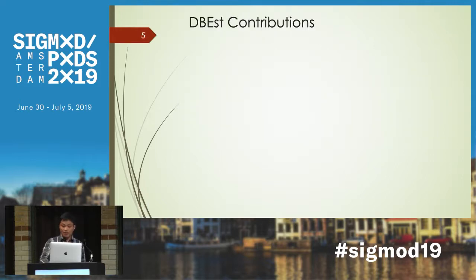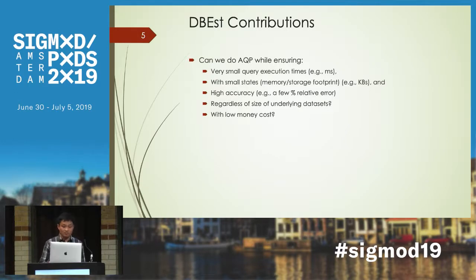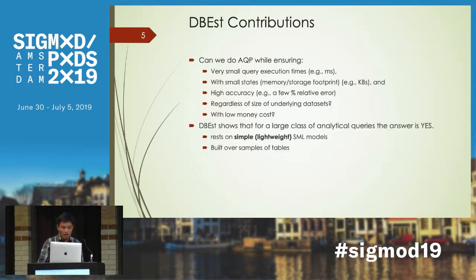So here comes the question: can we do AQP while ensuring very small query execution times — maybe several milliseconds — and high accuracy, regardless of the dataset size, and also with low mining cost? With DBS, we show that the answer is yes for a large class of queries.